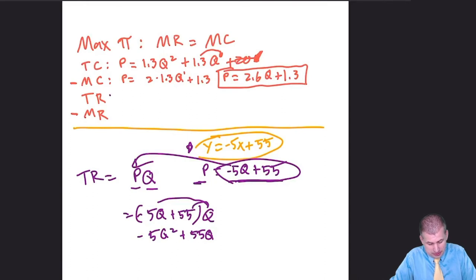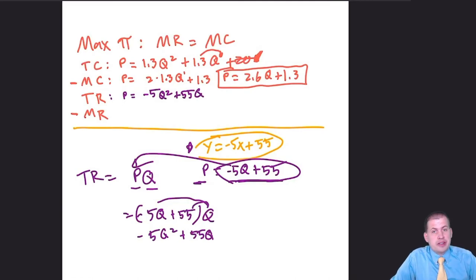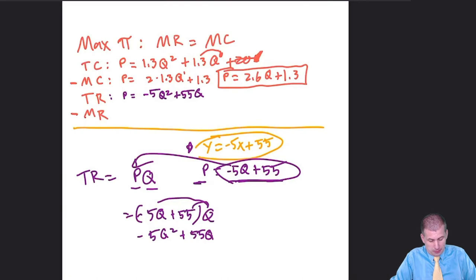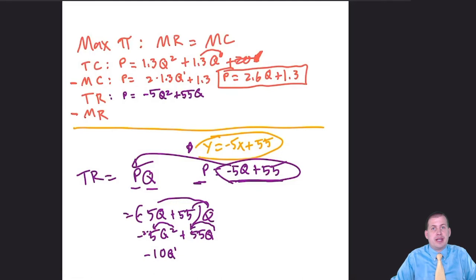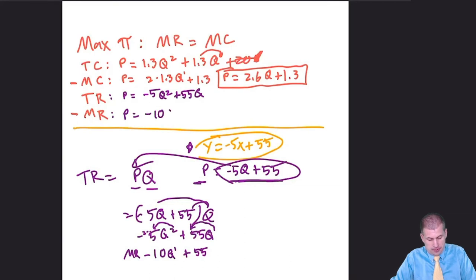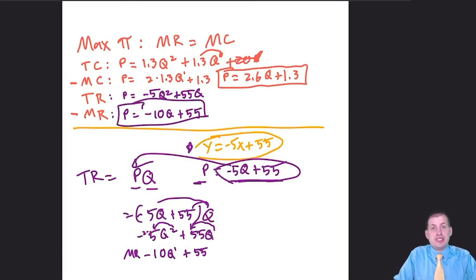Now that we have total revenue, we can find marginal revenue, which is just the first derivative of total revenue. Applying the power rule: bring the exponent down on −5q², giving −10q; the 55q term gives 55; and q disappears. So marginal revenue equals −10q + 55.